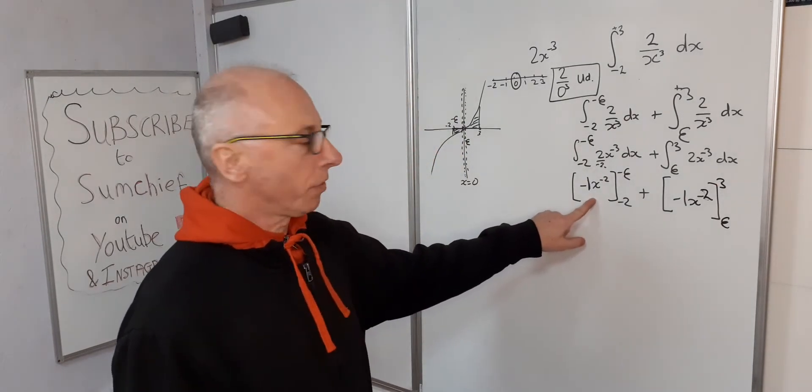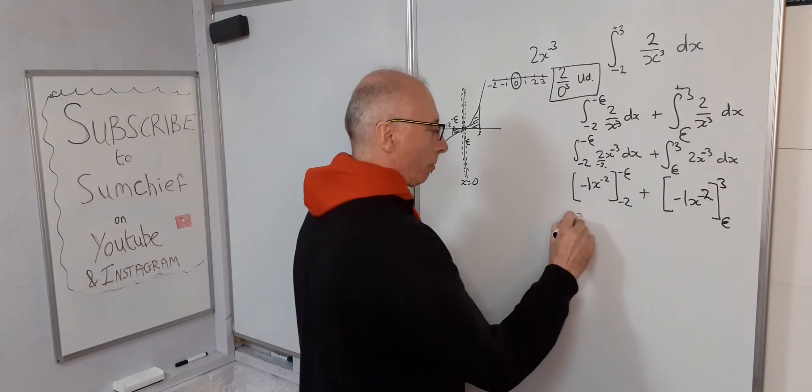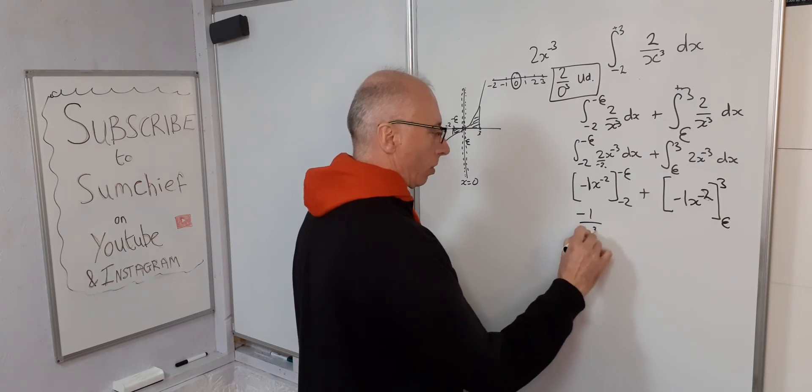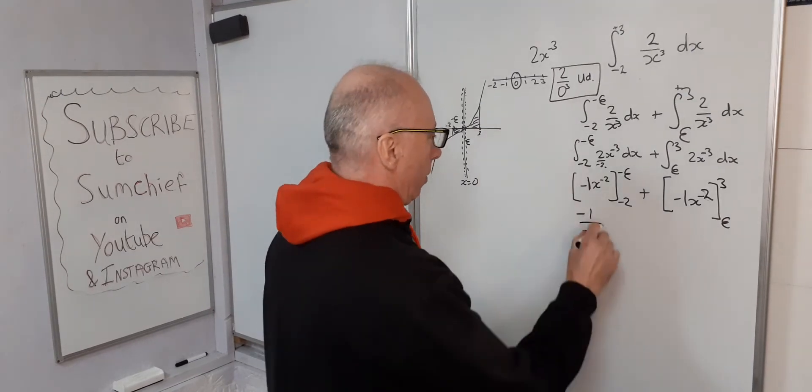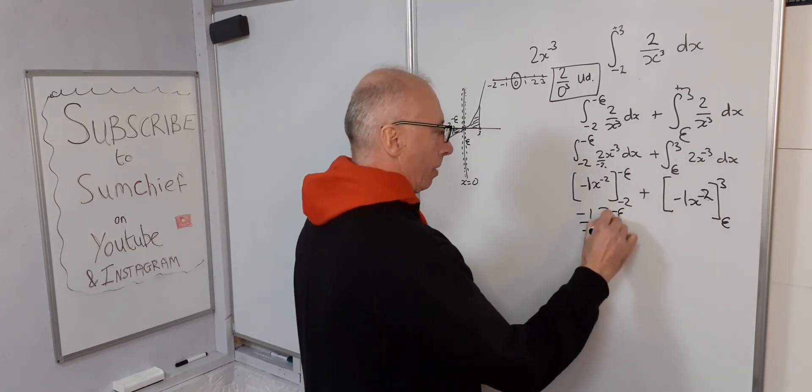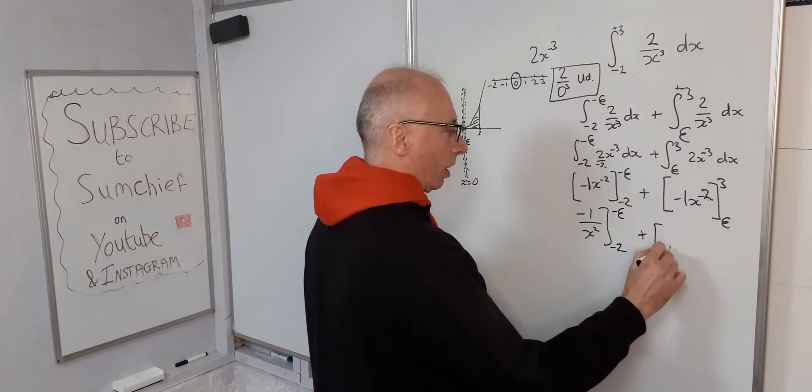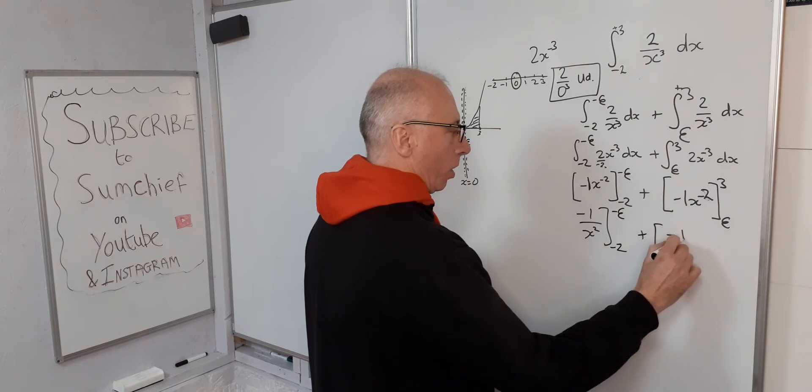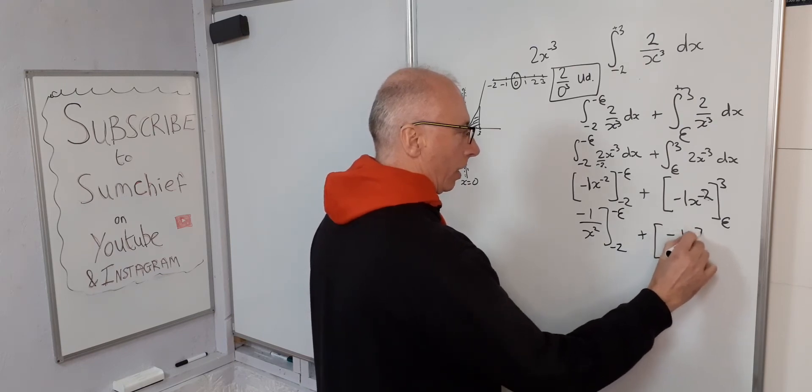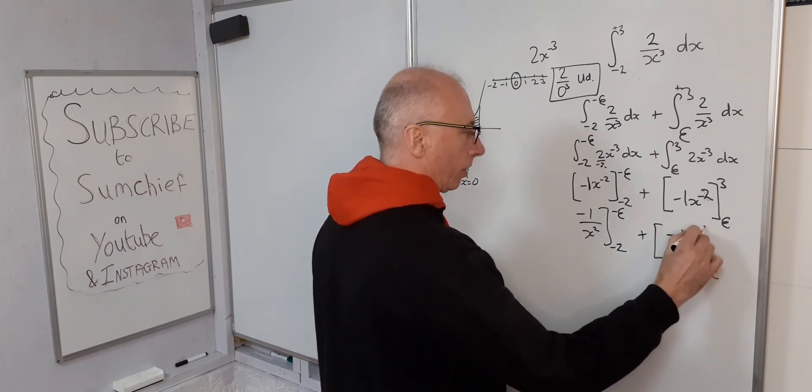Okay, let's just rewrite this as a fraction. So it's minus 1 over x squared from negative epsilon to negative 2, plus negative 1 over x squared from epsilon to 3.